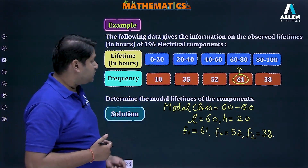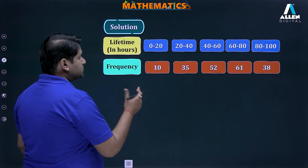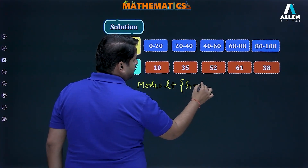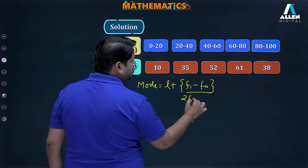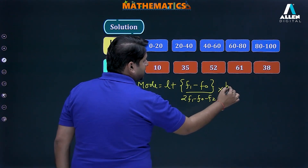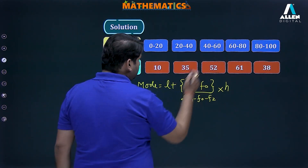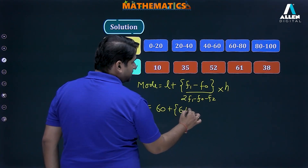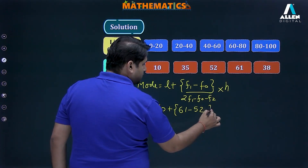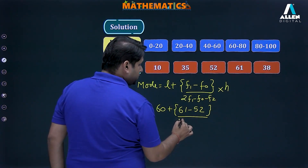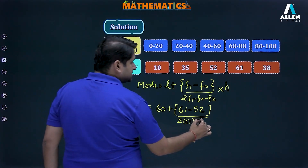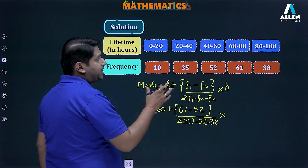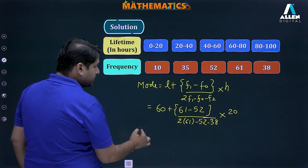Now substituting into the formula: Mode = l + [(f1 − f0) / (2f1 − f0 − f2)] × h = 60 + [(61 − 52) / (2×61 − 52 − 38)] × 20.